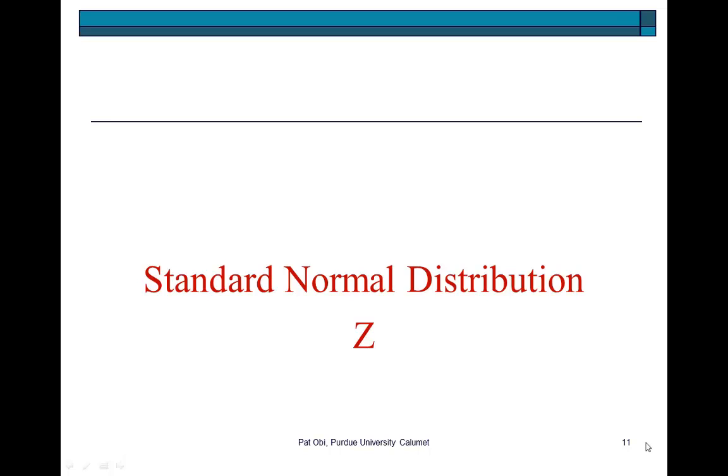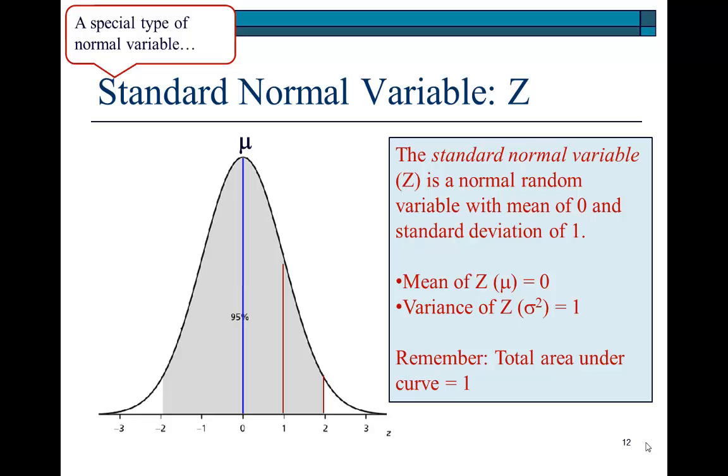In this section of the discussion on normal distribution, I introduce a special type of normal variable called Z. Z is referred to as a standard normal variable in that its mean, as I show here, is 0 and its standard deviation is 1.